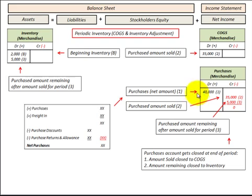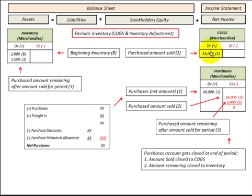We have $40,000 in purchases. We look at the amount sold — in this case $35,000. We credit Purchases for $35,000 and transfer that amount into Cost of Goods Sold for the period, debiting Cost of Goods Sold by $35,000.